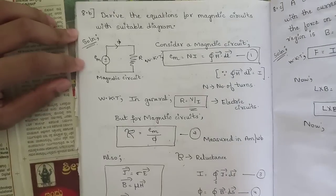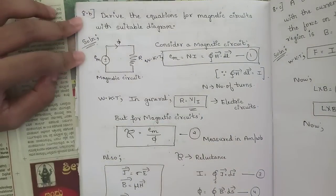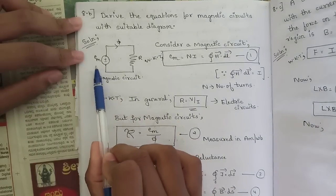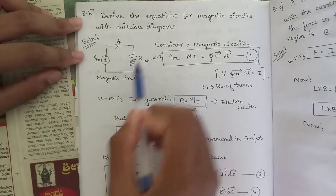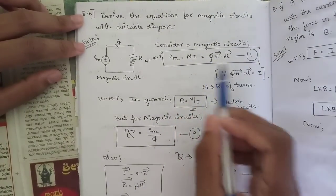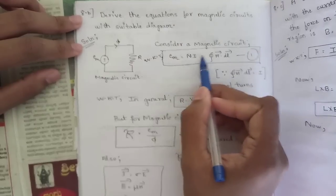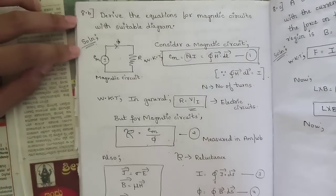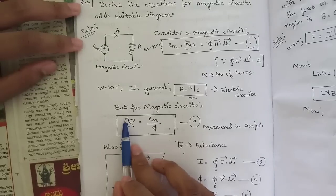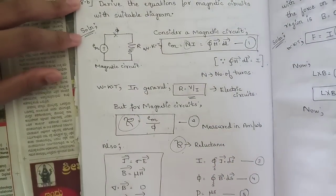Next is an important model paper question 8p: Derive the equations for magnetic circuits with a suitable diagram. Draw a circuit with EMF source represented as ℰₘ, flux φ, and resistance. For a magnetic circuit: ℰₘ = NI = ∮H · dl (from Ampere's law). Reluctance R = ℰₘ/φ, measured in amperes per weber.